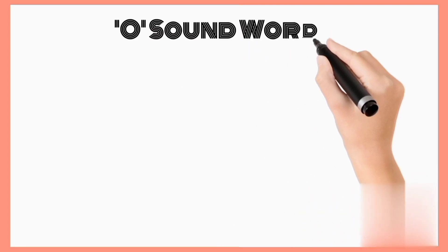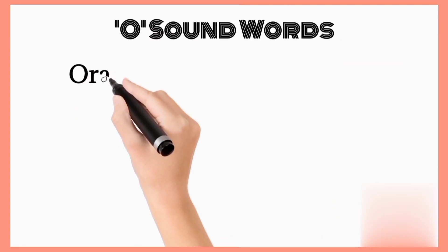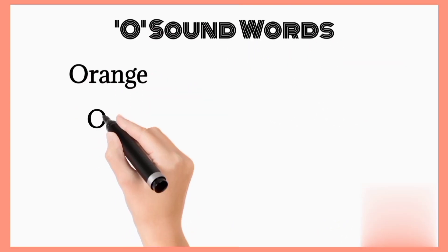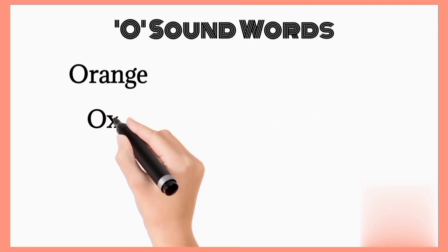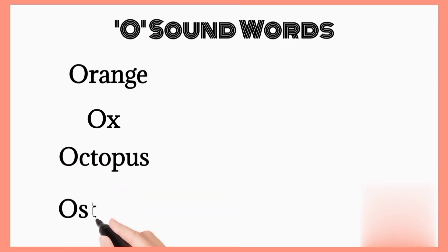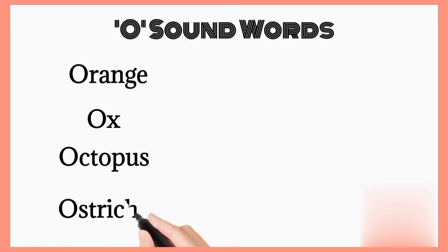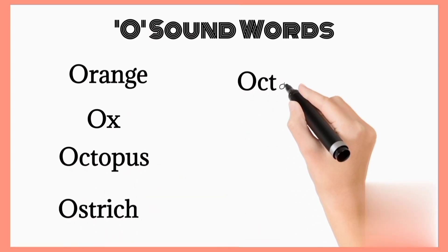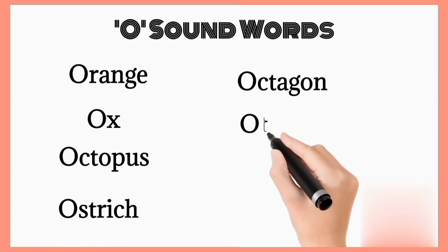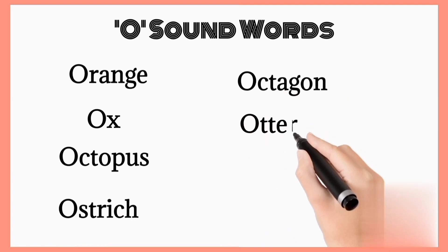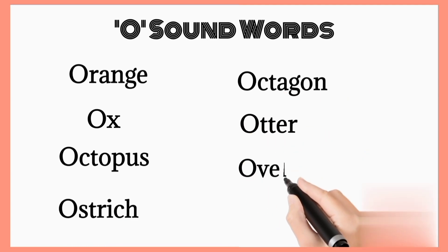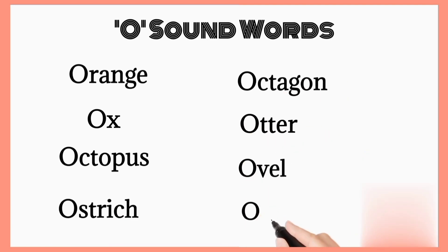O sound vowels. Orange. Ox. Octopus. Ostrich. Octagon. Otter. Oval.